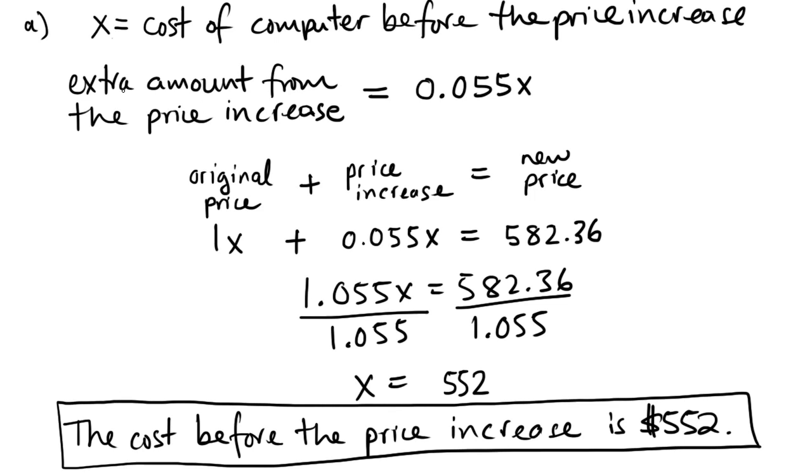So that would be my answer for that one. I wrote down a lot of stuff here, but it's really easy what's going on. If you have something and the price is going to be increased, you just multiply that dollar value by the rate. The rate is just the percentage changed to a decimal. If you add those two, you'll get your new price, then we just do some simple algebra. Alright, so what about B?